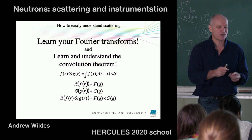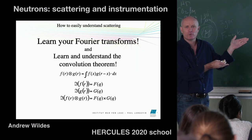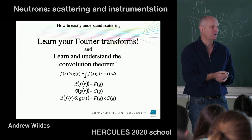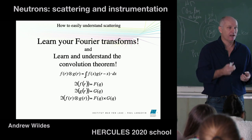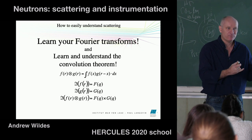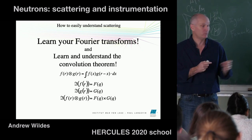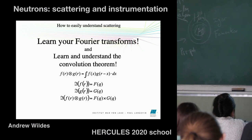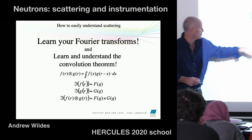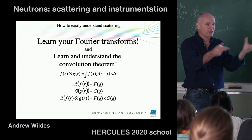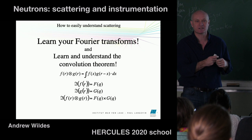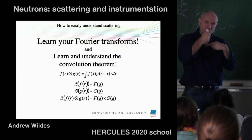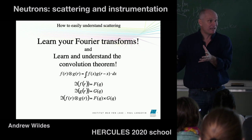The first thing about understanding scattering — and there are essentially three slides — is: learn your Fourier transforms. This is an extremely important and powerful method to be able to consider scattering, even in your own head. If you can picture Fourier transforms and use the convolution theorem, you can take a convolution in real space, and that becomes a multiplication of the Fourier transforms of those two functions. That's a very powerful way of taking an arrangement of atoms in real space and picturing how it would appear in a scattering experiment.